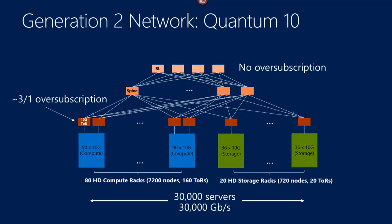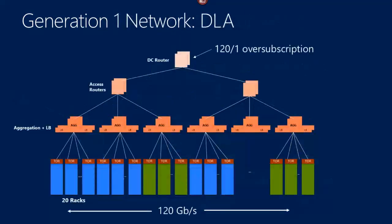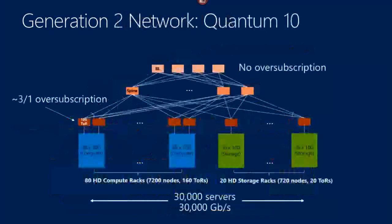The previous design was roughly a 10,000-server scale; this one is 30,000-server scale. And east-west bandwidth went from 120 gigabits per second to 30,000 gigabits per second. Really highly optimized.